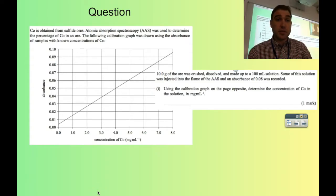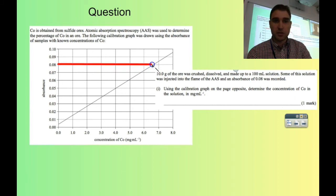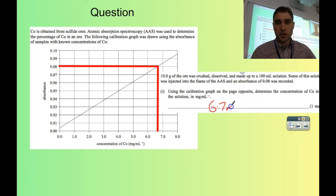Let's look at a question. It says, cobalt was obtained from sulphide ores. AAS is used to determine the percentage of cobalt in the ore. We get this calibration graph. I had another video where I went through how to make calibration graphs, so you can have a look at that if you'd like. It says 10 grams of ore was crushed, made up to 100 ml solution. Absorbance of 0.08 was recorded. Determine the concentration of cobalt. We're going to find the concentration by using the calibration graph. The absorbance is 0.08. I'm going to draw a line from 0.08 across until I cut the curve. And then from there we need to figure out what the concentration is. I'm going to draw a line from the top down. Now we can see that it cuts the line at around about 6.7. It's 6.7 milligrams per ml.